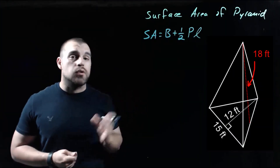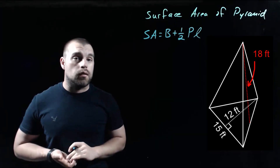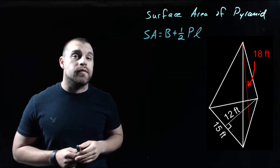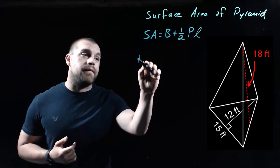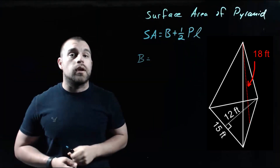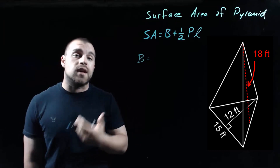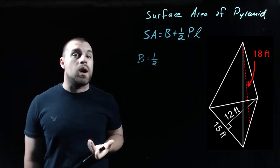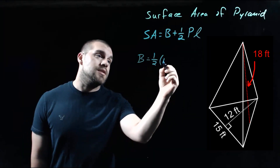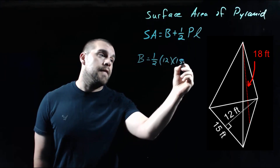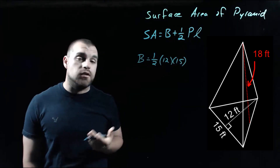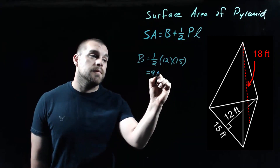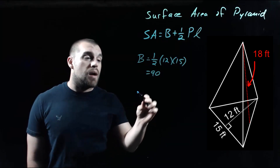Take a look at our next example. We've got a triangular pyramid with an equilateral triangle as its base, so all the sides of that triangle on the bottom are exactly the same length. We're going to find the surface area again, so we start by finding the area of the base. Since the base is a triangle, we need to do one half times the base times the height, and they have to make a right angle. We're looking at the 12 and the 15 as our base and height, so half of 12 is 6, and 6 times 15 is 90 — the area of the base is 90.